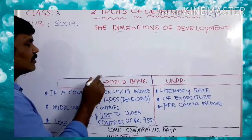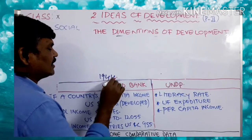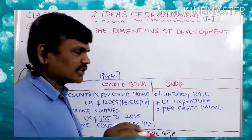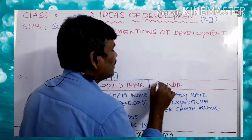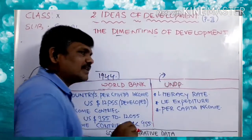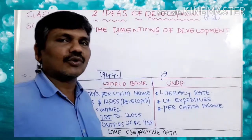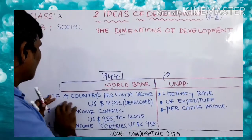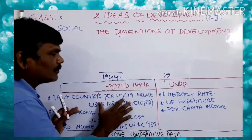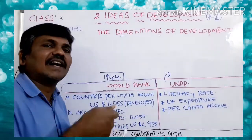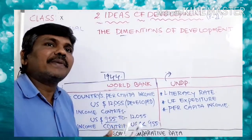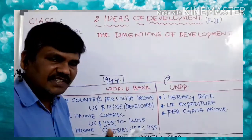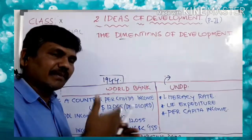The World Bank was established in the year 1944. Its headquarters is in Washington, America. These two organizations classify countries as developed, undeveloped, or developing — three stages.